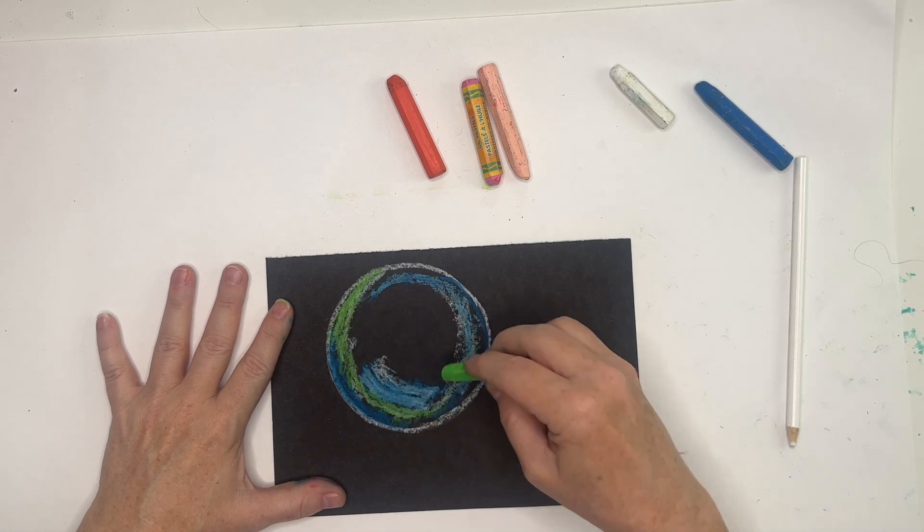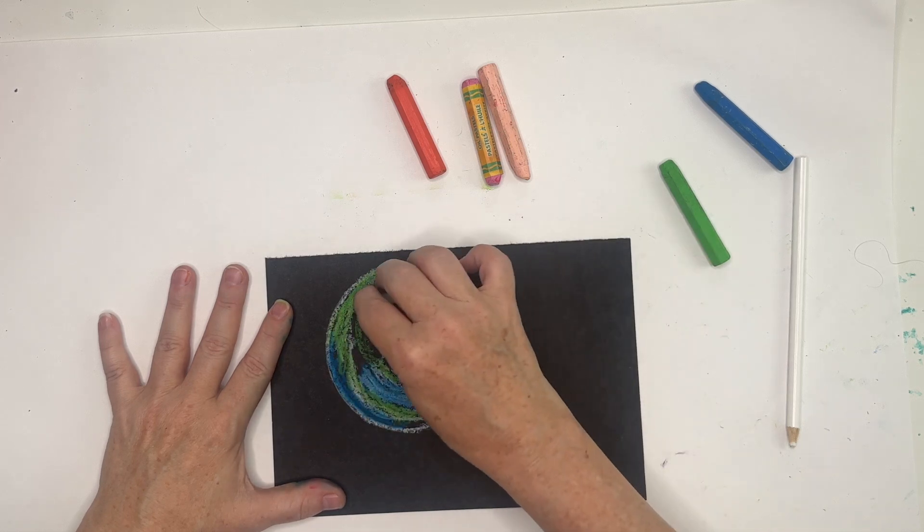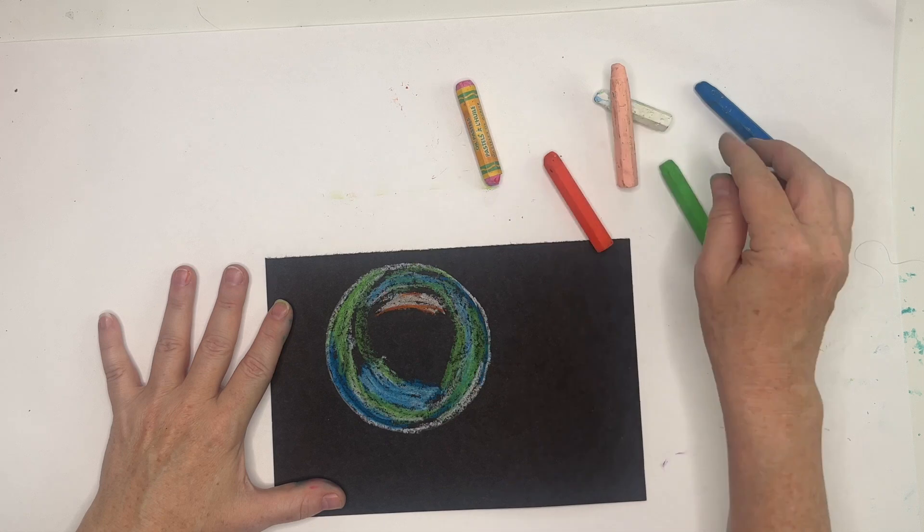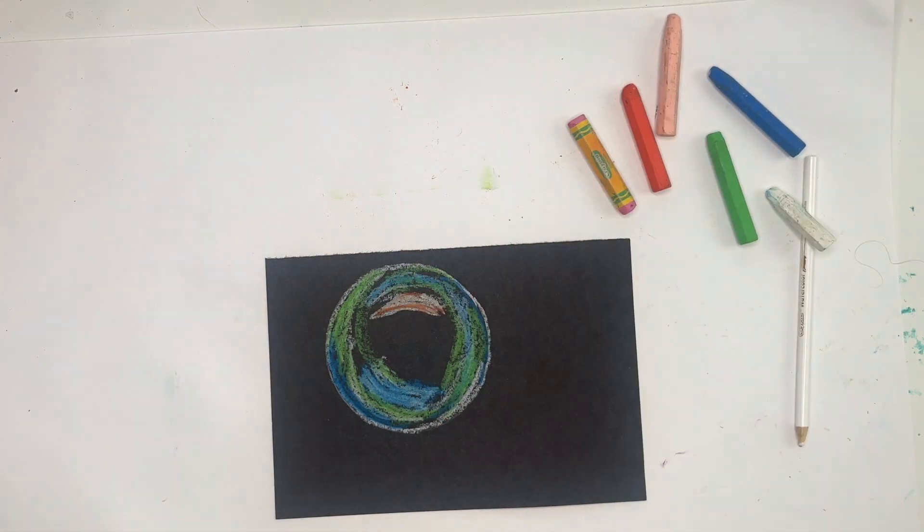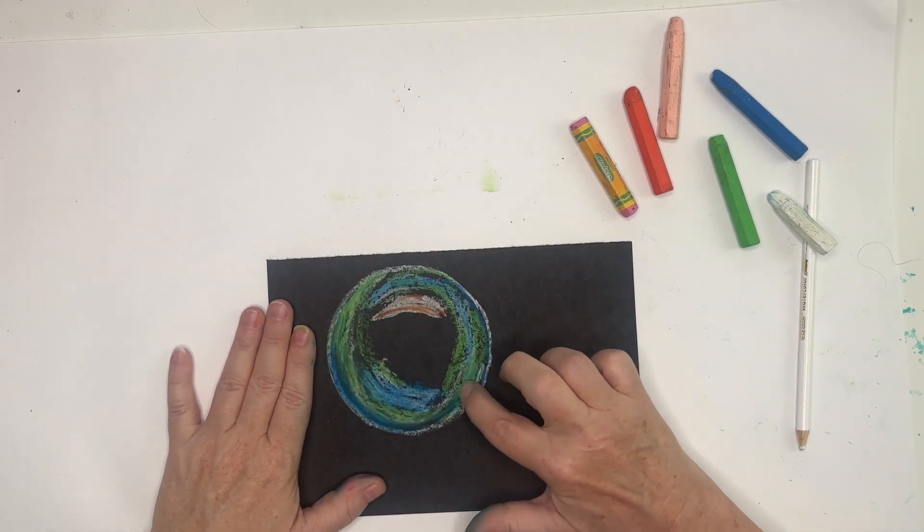Once you have your colors, just lightly blend with your fingers. This is where the oil pastels get messy.